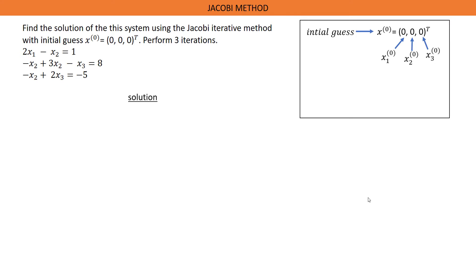The initial guess value will not always start from [0, 0, 0] but can vary. However, if no initial guess value is given, we can start from [0, 0, 0]. We are to perform 3 iterations here.